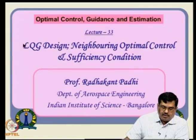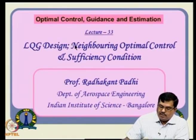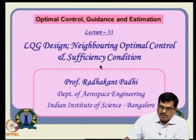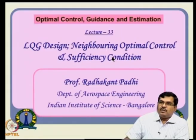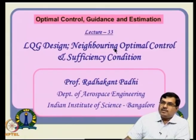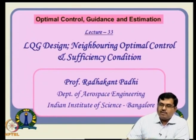One thing that comes to mind is LQG design, which is a Linear Quadratic Gaussian design. We will also study something like neighboring optimal control — given an optimal path, how do you find another optimal path close to that. Along with that, sufficiency conditions are classified in various categories like weak sense and strong sense. We will summarize the results in the weak sense, as the strong sense requires a lot of mathematical tools.